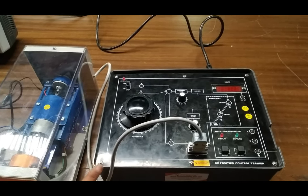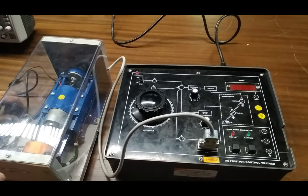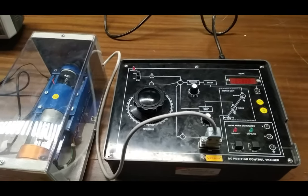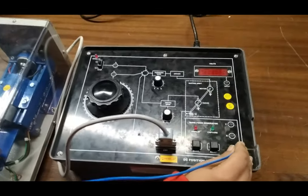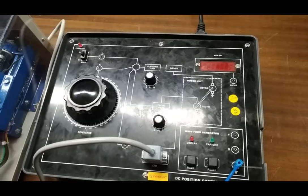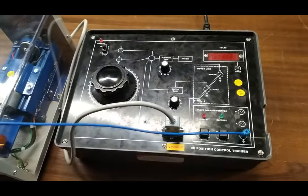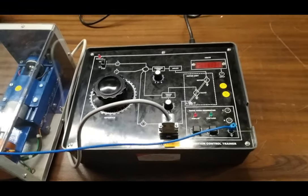We are going to make the connections. First, we connect the ground terminal to the negative terminal of the oscilloscope.